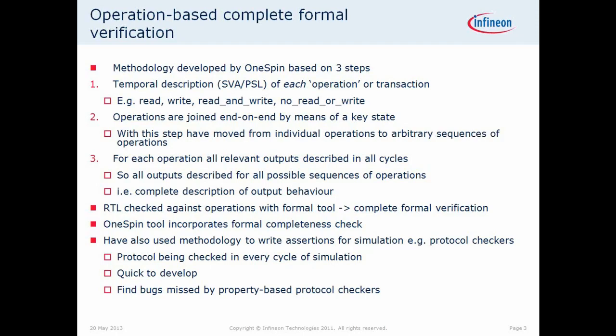You join these operations end-on-end by means of a key state. Typically, if you're going to verify that a read works correctly, your design needs to be in a state where it can accept a read or a write. So the first thing you do when you write one of these operations is declare your key state, describe the operation, and then prove that you also end in your key state — so your design is ready to start the next operation. In this way you can put operations end-on-end, moving from verifying any single operation to verifying any sequence of operations. The last thing you need to do is prove all relevant outputs in all cycles. Putting these three things together, you have all outputs described for all possible sequences of operations — a complete description of output behavior. This is what I mean by completeness.